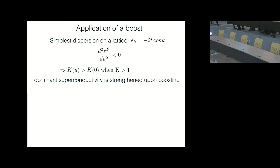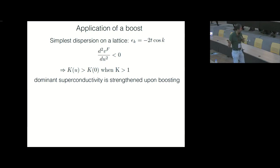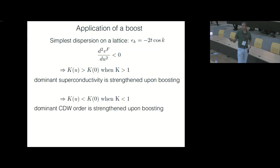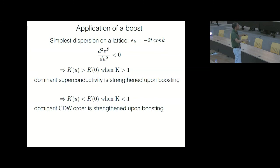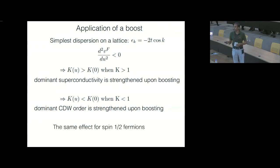So if you had dominant superconducting order to begin with and you had this kind of dispersion and you boosted the system, the value of the Luttinger parameter increases — it becomes even greater than one — and the superconducting correlations fall off even slower. In that sense, superconductivity is strengthened when you apply your boost. I should emphasize that this is because of this kind of dispersion — it is not true of all kinds of dispersions; it really depends on the sign of this quantity. Similarly, if k were less than one with dominant CDW correlations, k becomes even smaller and those correlations get even more dominant — so dominant CDW order is also strengthened for this kind of dispersion upon the application of a boost.